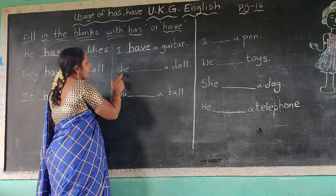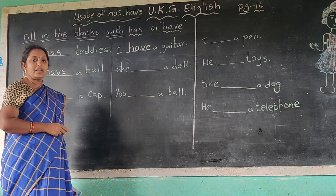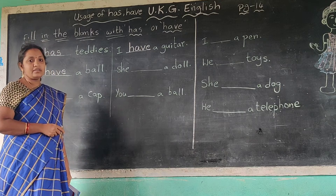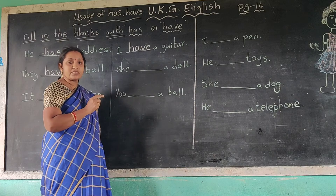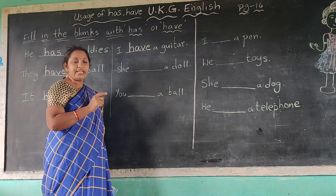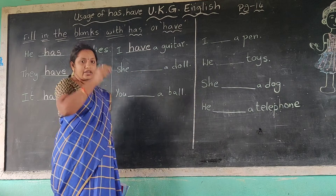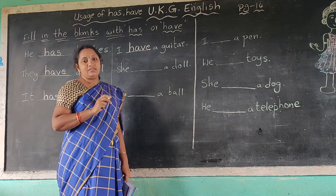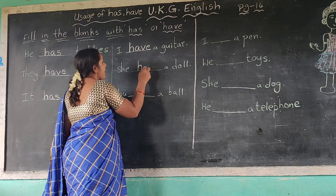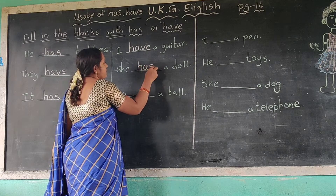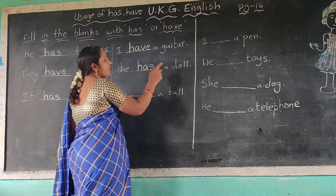Next one: she dash a doll. She — has or have? She uses 'has'. He, she, it — has. She has a doll. Spelling H-A-S. She has a doll.